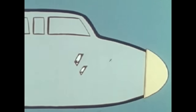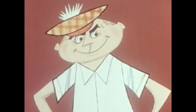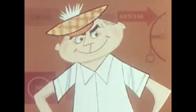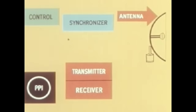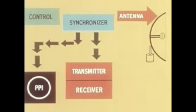Standard installation provides two scopes, one for the pilot and one for the co-pilot. The synchronizer generates timing impulses called trigger pulses at the rate of 400 a second. These are sent to the transmitter and the scope both at the same moment.